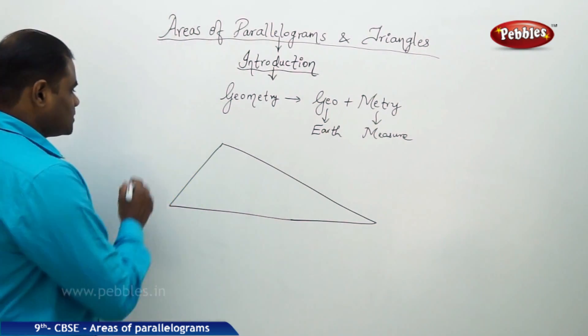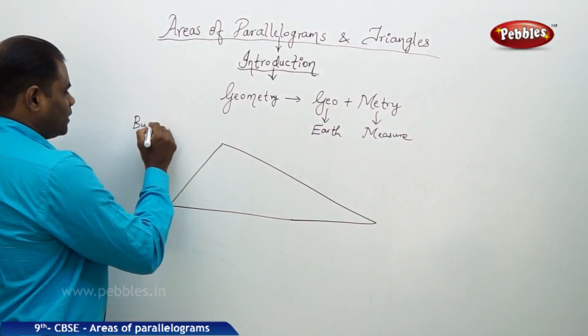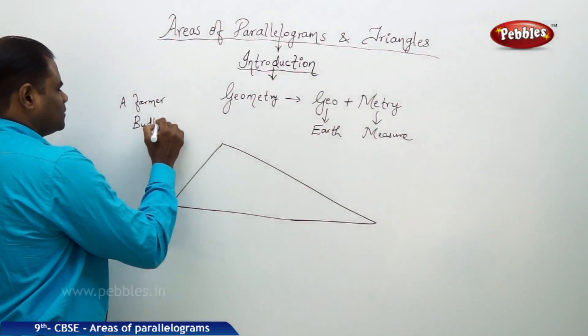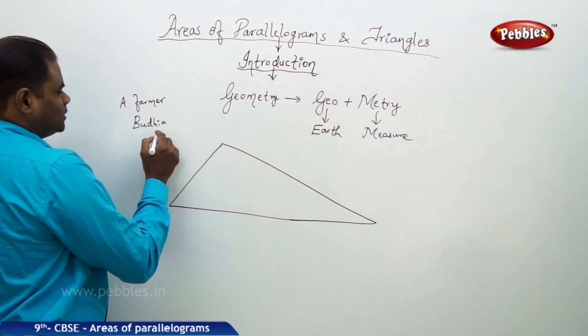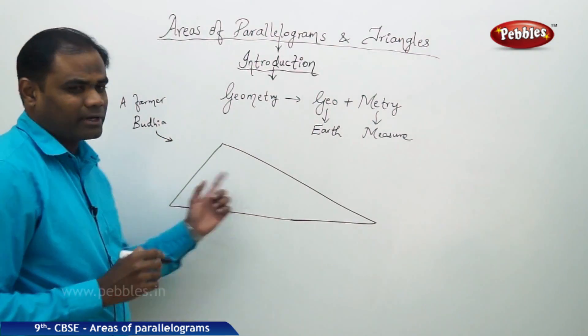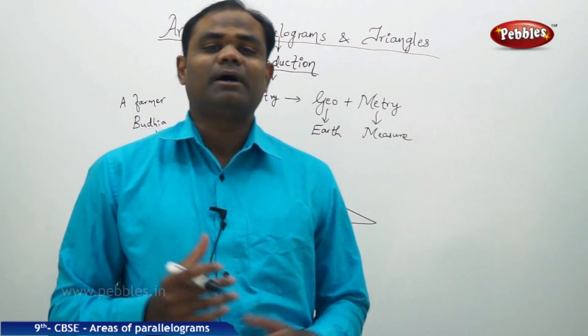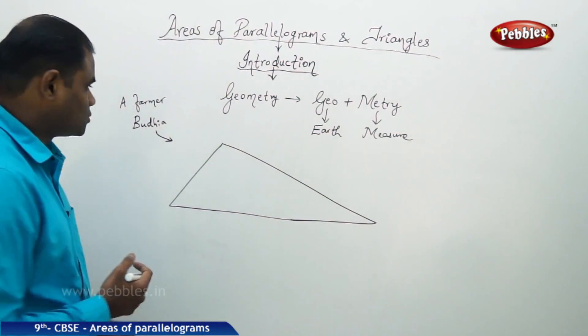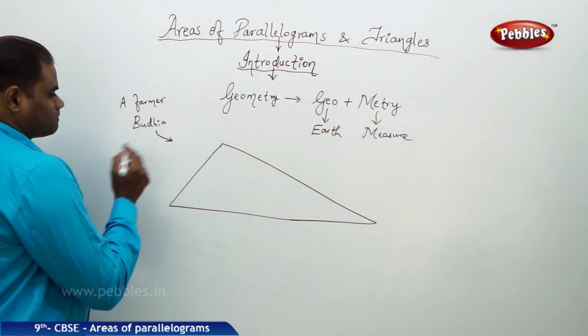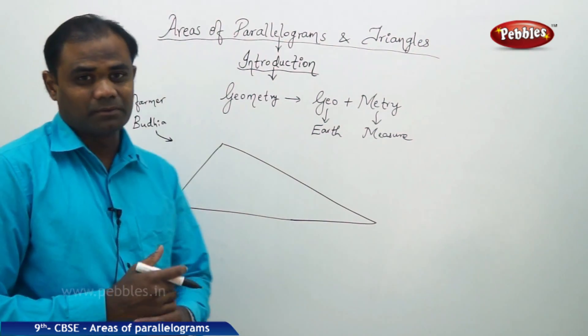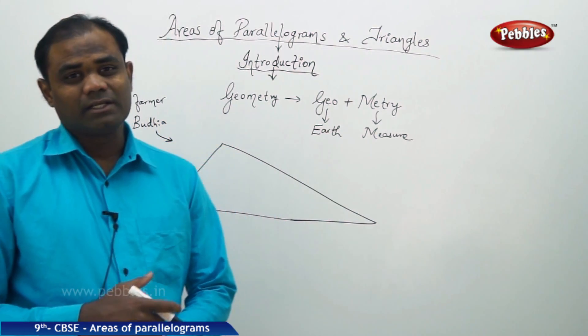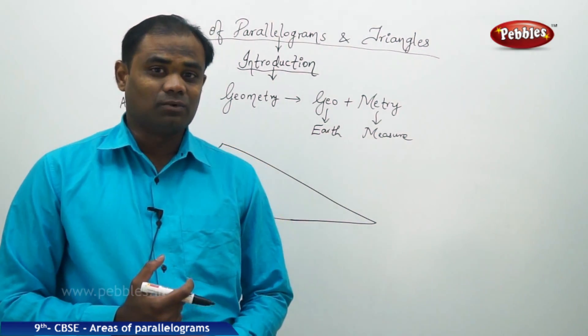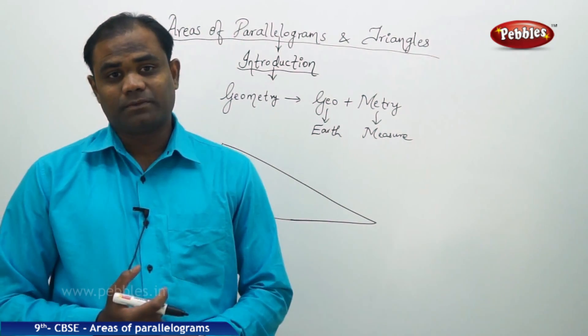For example, say Budiya was a farmer. Farmer Budiya wanted to divide his triangular piece of land into three parts so that he could distribute the land to his two daughters and one son. So how can he distribute this triangular piece of land equally without any disputes?